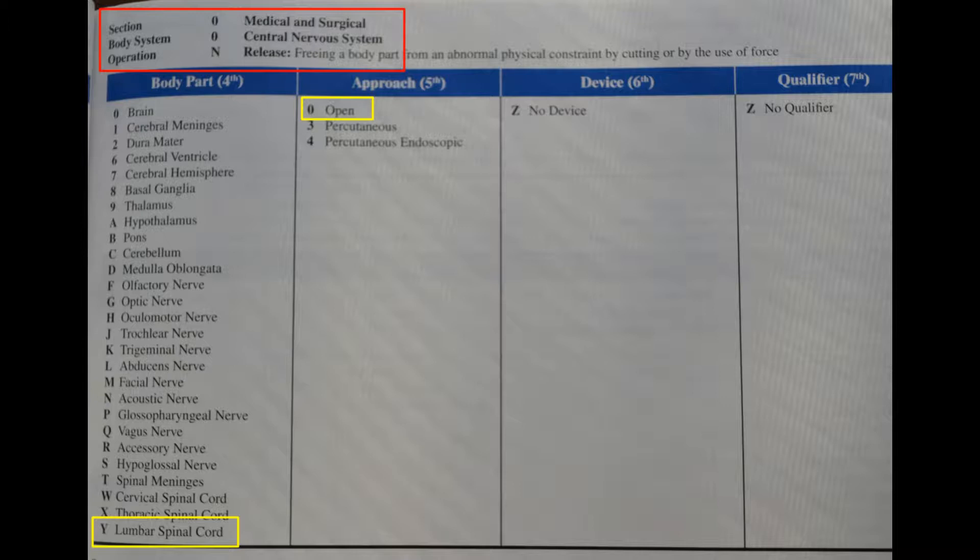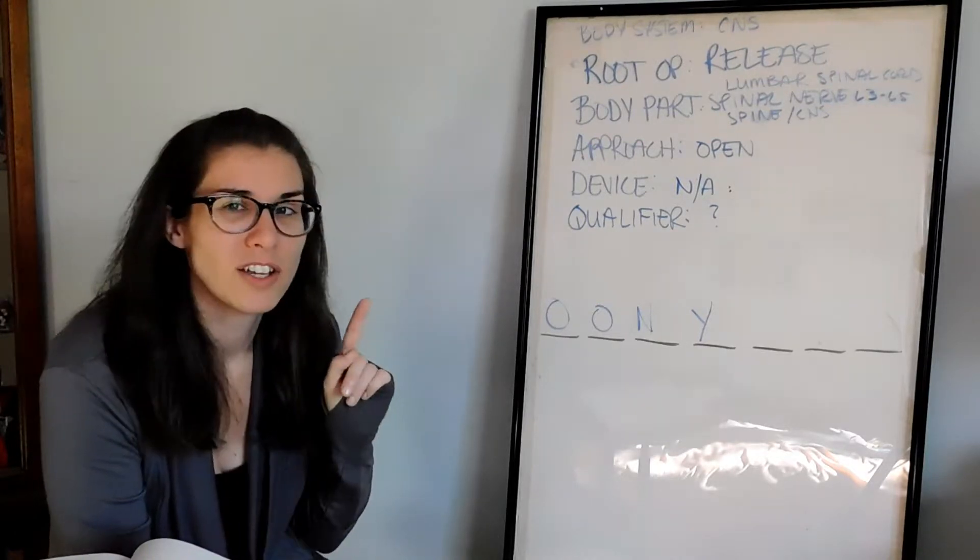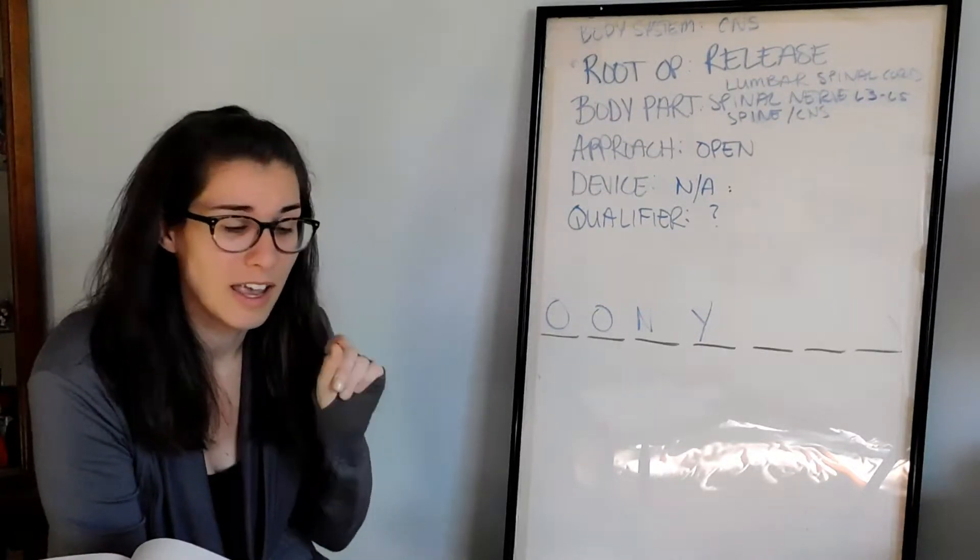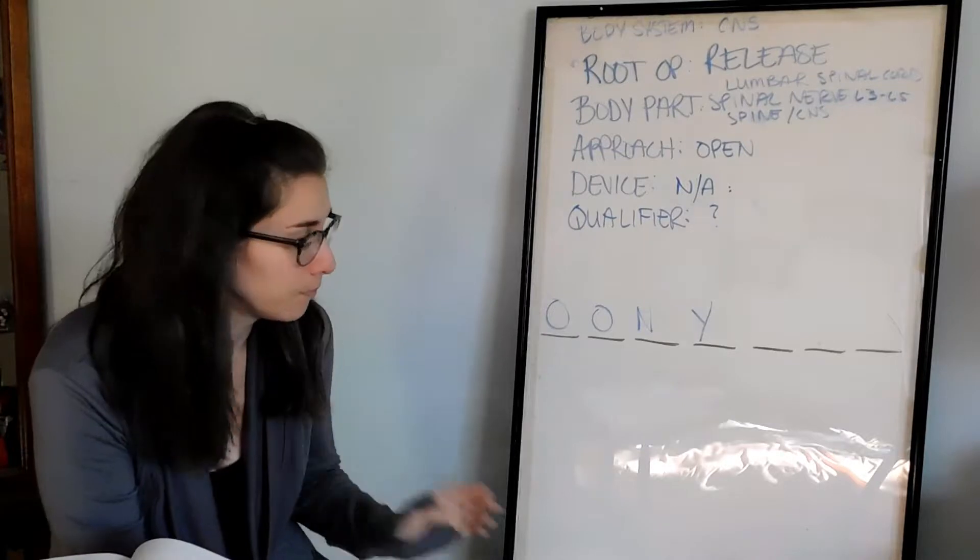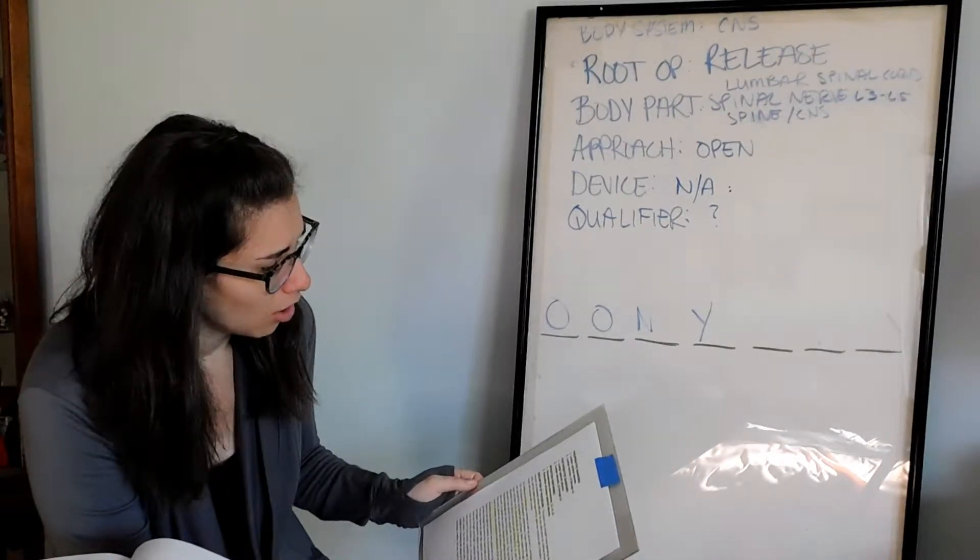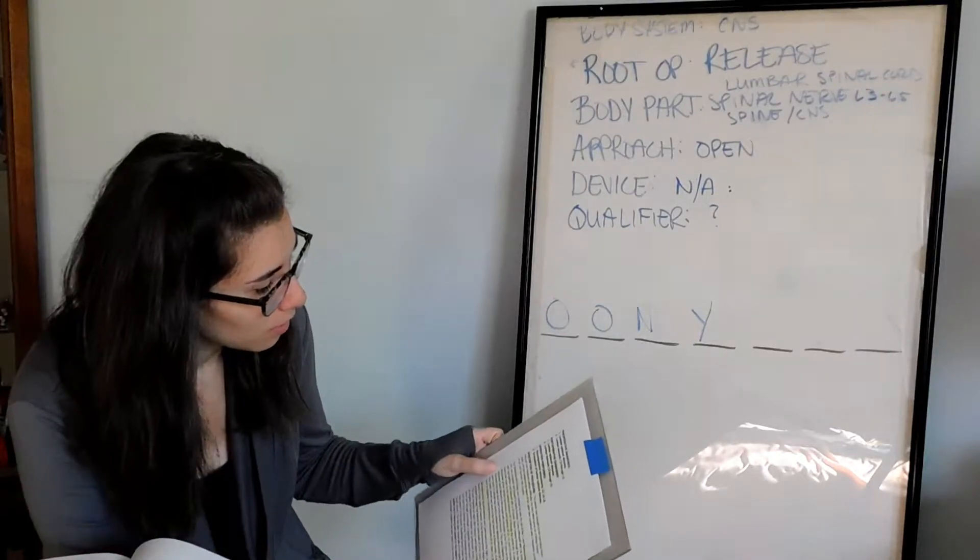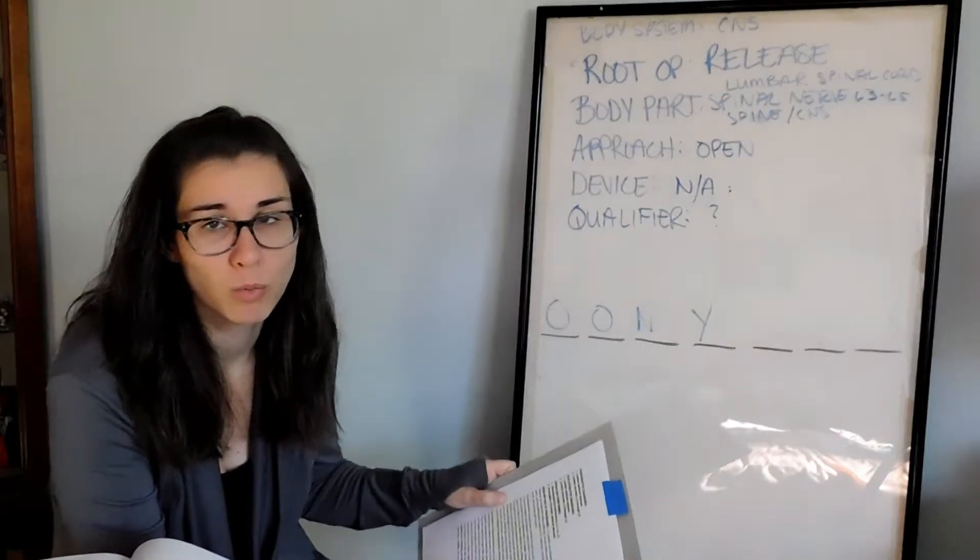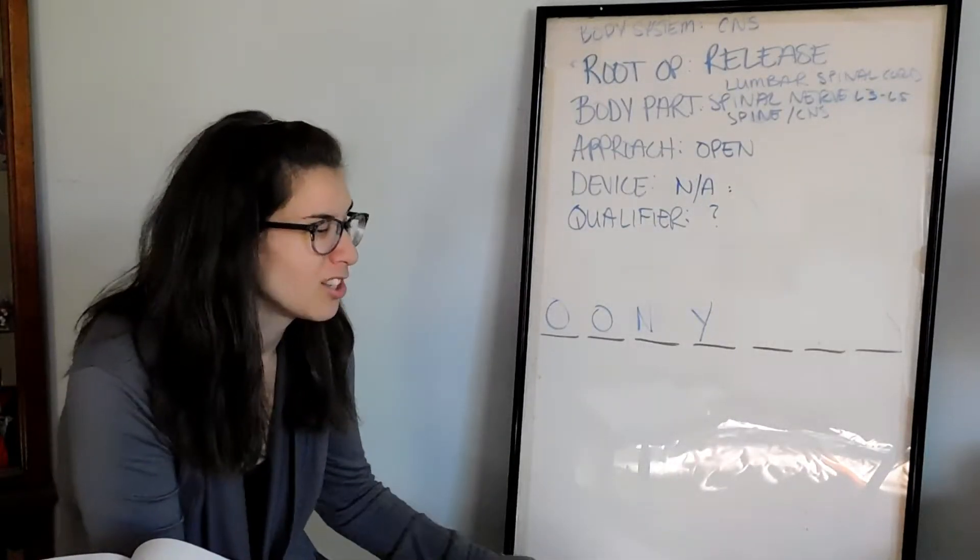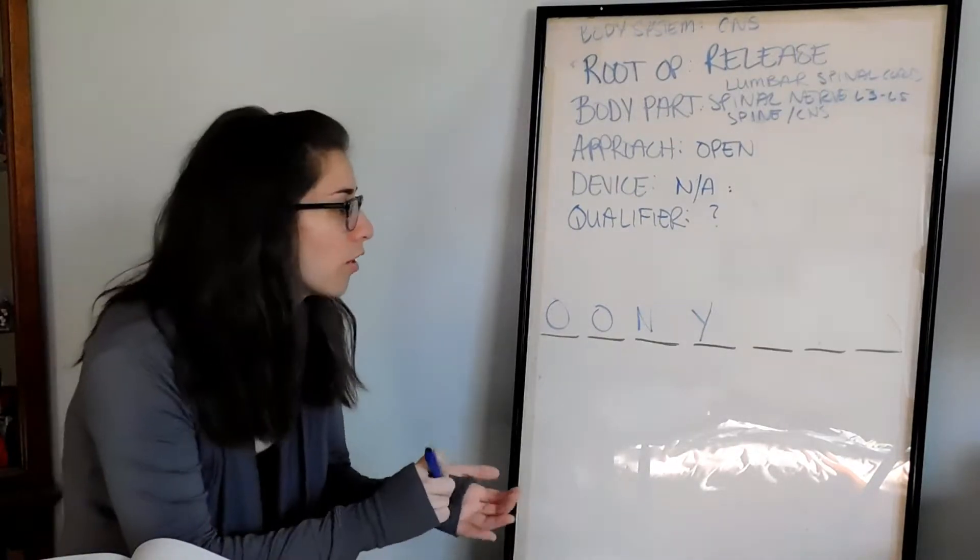We go to our next column for the approach. I decided it was open. They weren't talking about a puncture. They weren't using a scope to assist them in seeing the body part they were working on. They said incision, opened, dissection, deep retractors that were placed in the wound or incision. So that tells me open. So we're going to choose O for open.